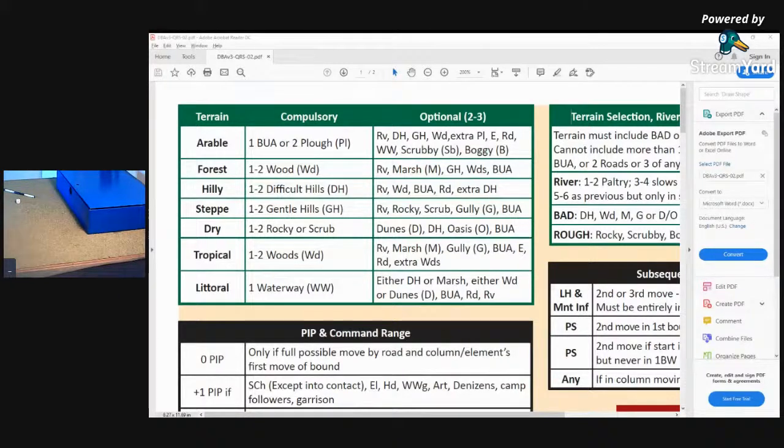As you can see here, various armies from arable through hilly all the way to littoral, and each of these core terrain types has within it compulsory terrain types and some optional terrain types.